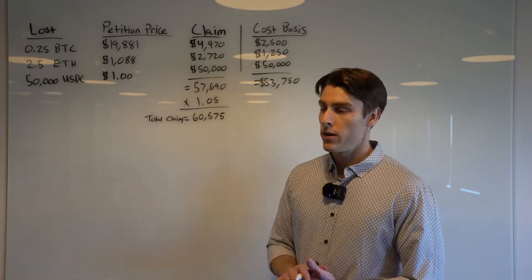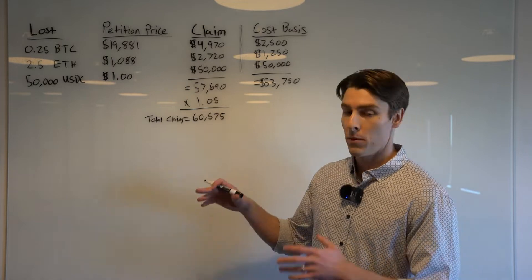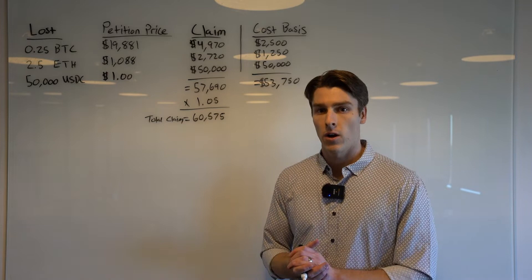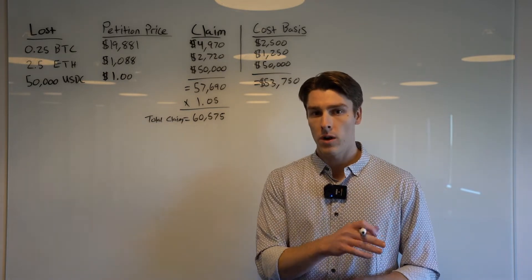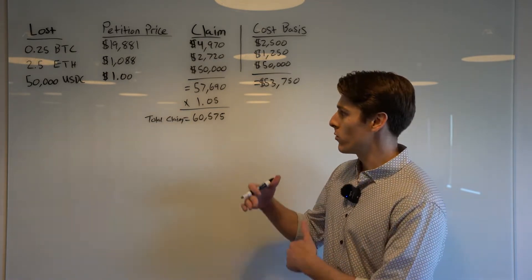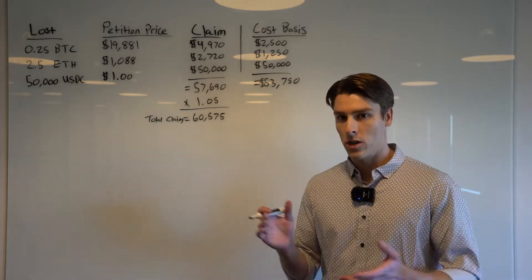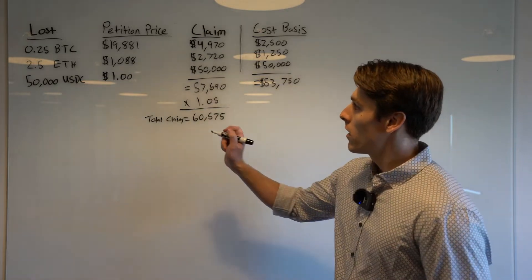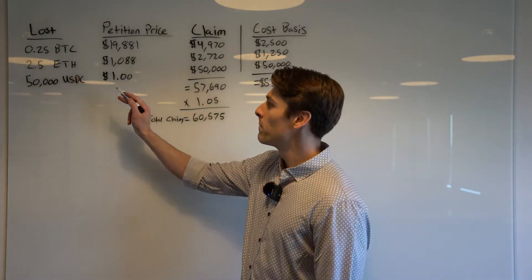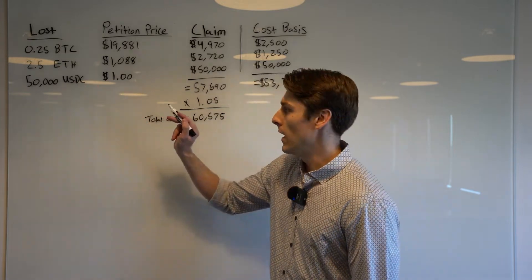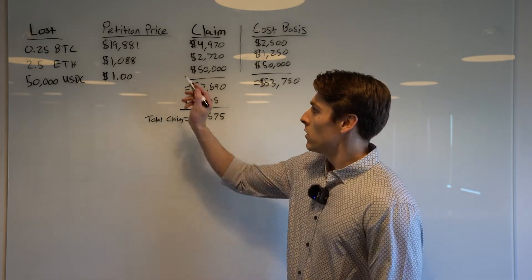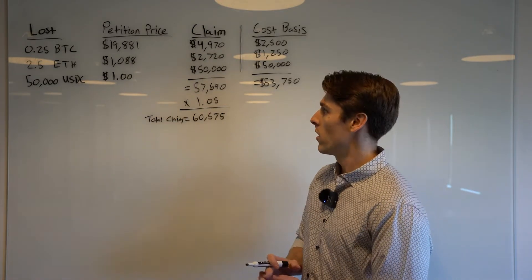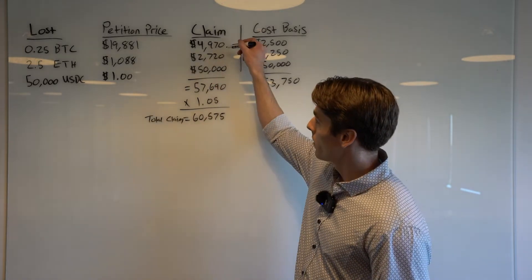If you recall from the first video, this scenario may look a little familiar. We are just changing up some of the numbers to do example number two in the Coinly article. If you haven't checked out that article, definitely go give it a read — there's a written guide going over both example number one and example number two. The scenario here is that you lost 0.25 Bitcoin, 2.5 Ethereum, and 50,000 USDC.